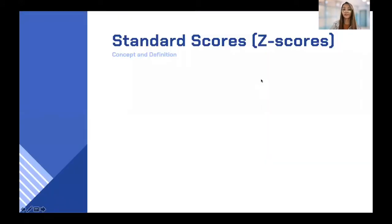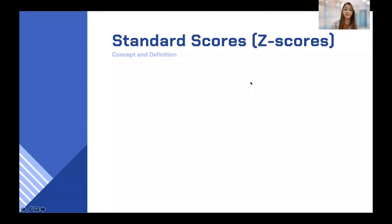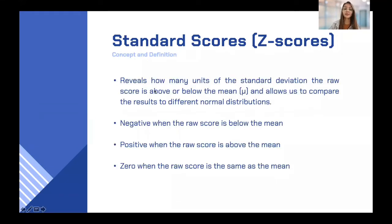Let's begin with the concept and definition of the Z-scores or the standard scores. If you recall our discussion about the normal distribution, the value of Z there is what you call the Z-score or the standard score. When you say standard scores, it reveals how many units of the standard deviation the raw score is above or below the mean, and allows us to compare the results to different normal distributions.